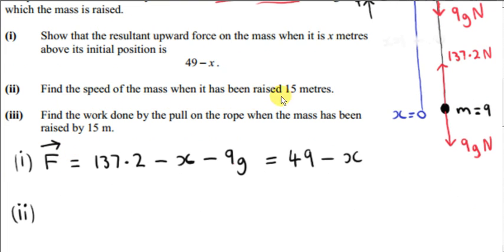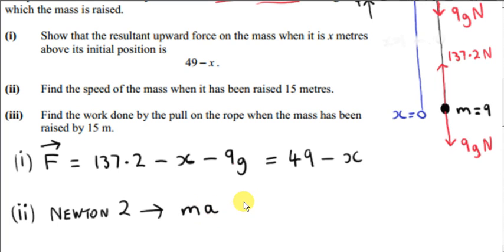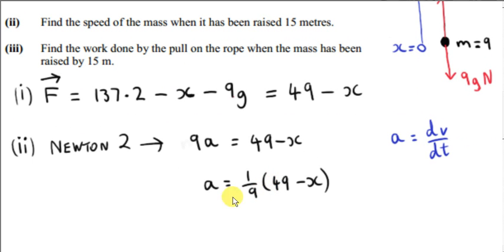Next, we want the speed of the mass when it has been raised 15 meters. We apply Newton's second law: the magnitude of the resultant force equals the mass times the acceleration, so 9a equals 49 minus x. We know that acceleration a is the rate of change of speed with respect to time, but we want to bring in the distance x, because we are given that the particle has been raised 15 meters.